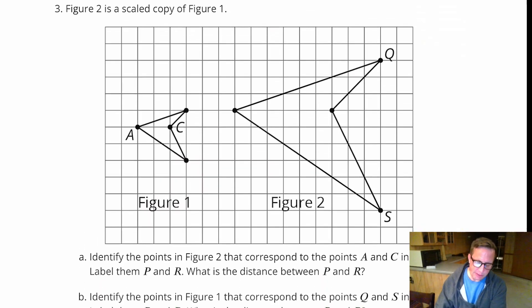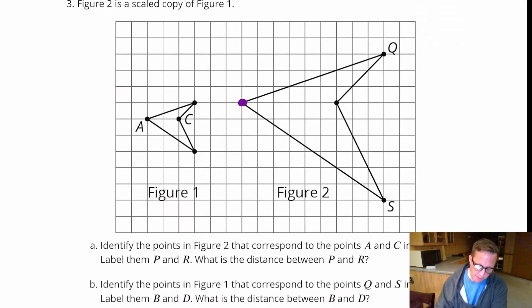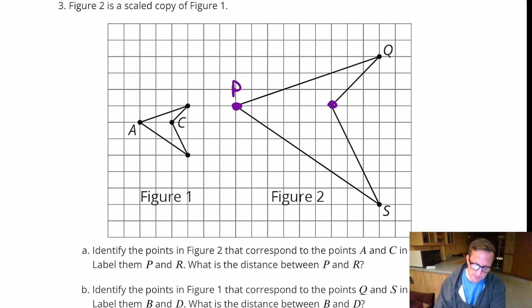Okay. So, A and C, this corresponds with A. So, I'm going to label that as P. Let me try that. That's P. And we'll call that R.